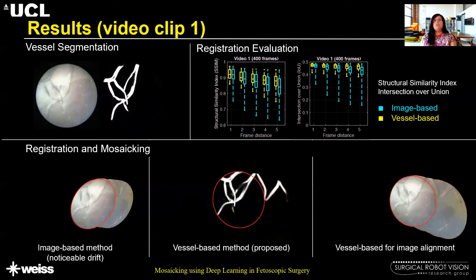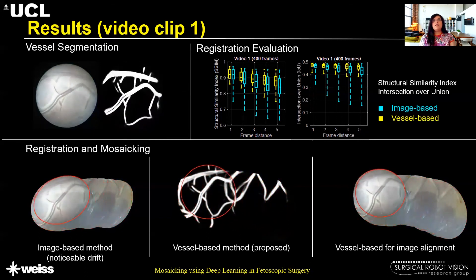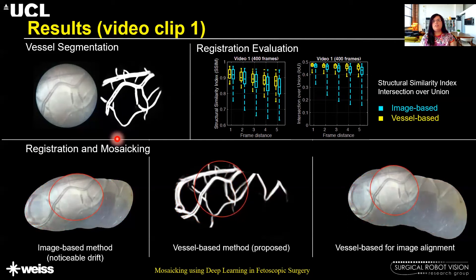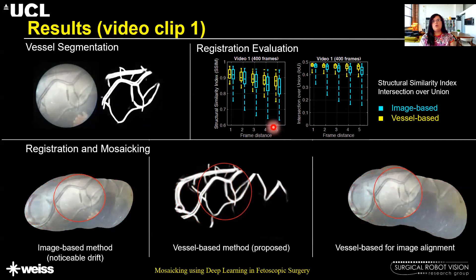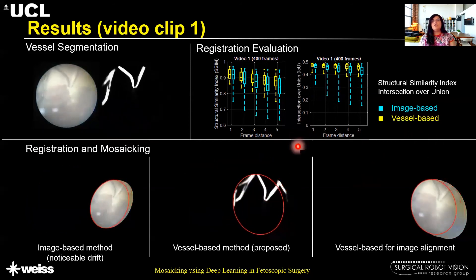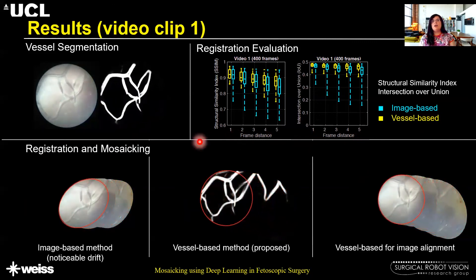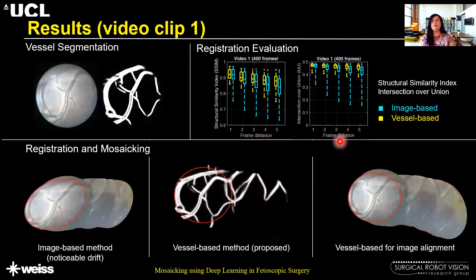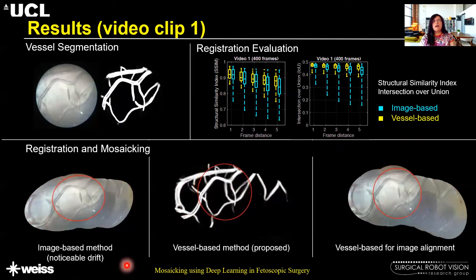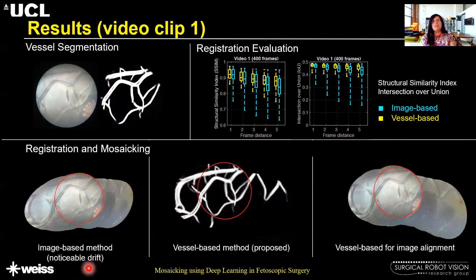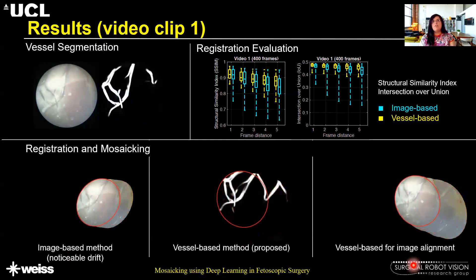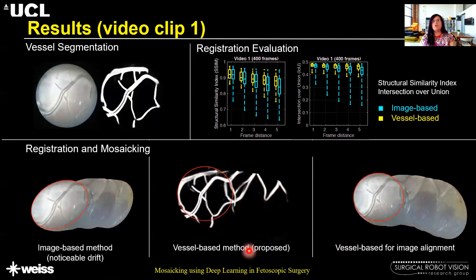Both qualitative and quantitative results are shown for one video clip, where vessel-segmented maps are shown on unseen, unannotated sequential data. Registration evaluation reports the structural similarity index and intersection over union over five consecutive frames. The image-based registration method gives a noticeable drift, while the vessel-based method produces quite consistent mosaics even for long-range video — this clip was about 400 frames long.